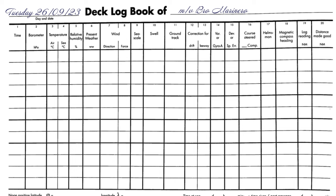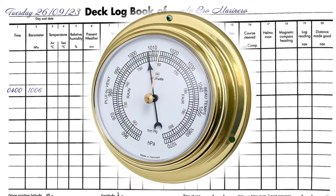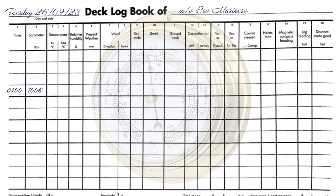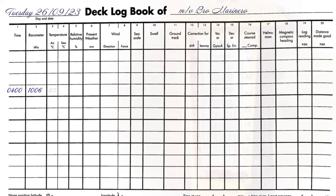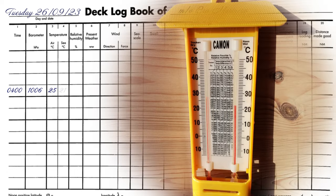Usually all entries are made at the end of each watch unless otherwise instructed by the captain. For example, in heavy weather, entries are made every hour. You should write down the following information: time, barometer readings, air temperature, and sea water temperature — which is usually asked from engineers.